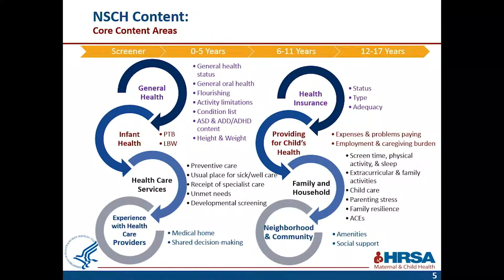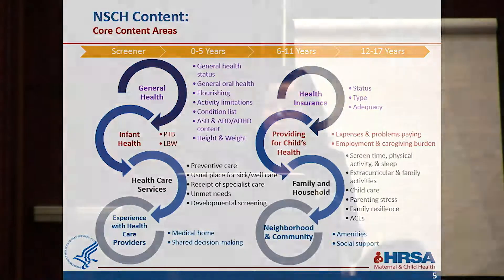One of the reasons the survey has broad utility really comes down to the breadth and depth of the content we cover. We cover eight core content areas, ranging from condition prevalence — we ask about 25 different conditions — to health care access, utilization, and quality, as well as a wide variety of questions around family and neighborhood factors that can influence a child's health. In addition to this core content, we also ask age-specific questions. For the youngest kids, we include content on healthy and ready to learn, or school readiness. For the oldest kids, we include content around health care transition planning.